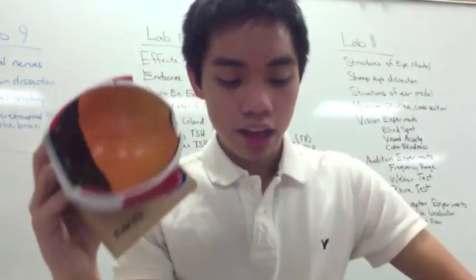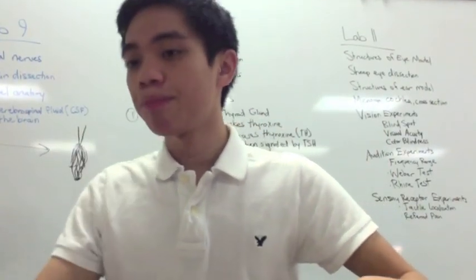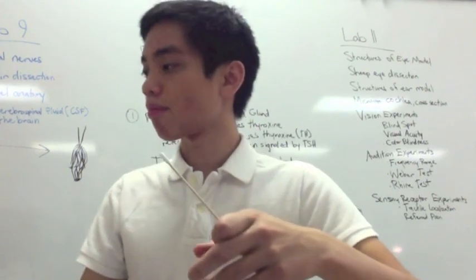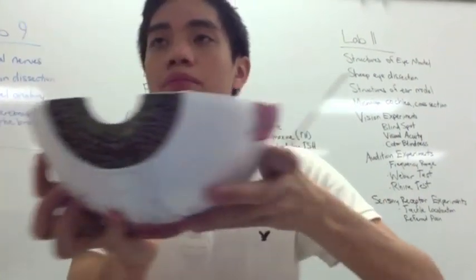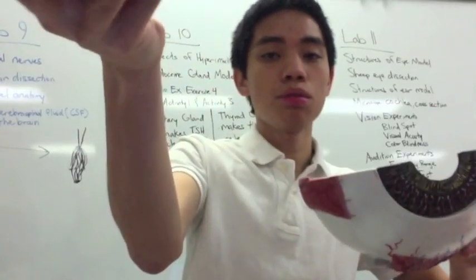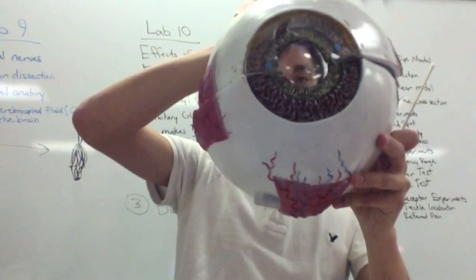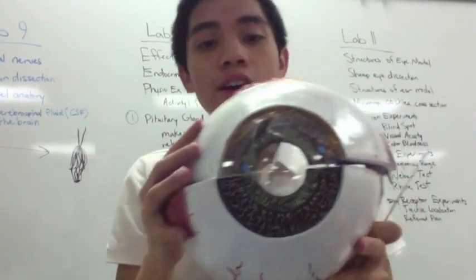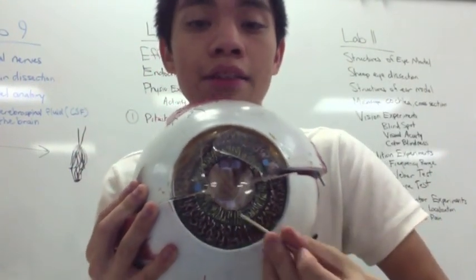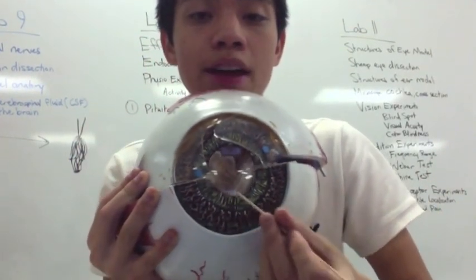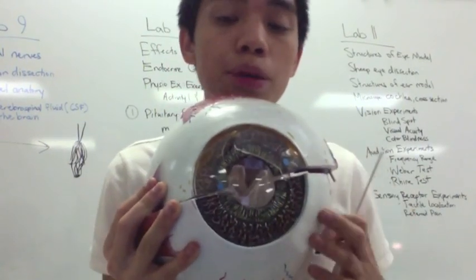And then you have the iris and the pupil. The colored part of your eye is called the iris, and the hole in the middle is called your pupil.